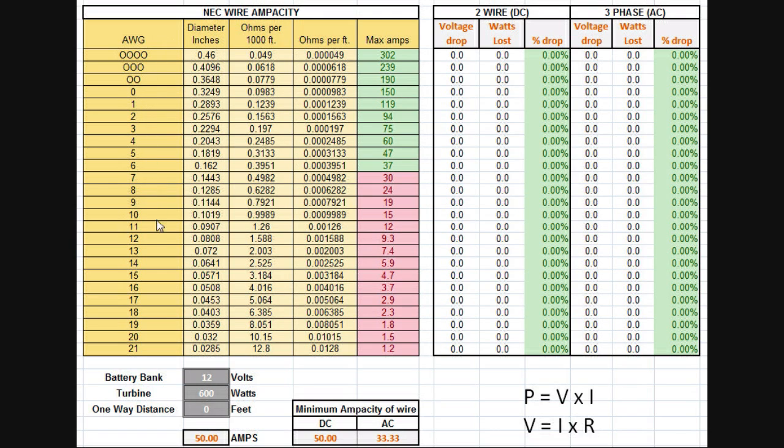I put the wire gauges from 4 aught all the way down to 21 gauge wire. The bigger the number, the thinner the wire is, and it will have higher resistance and therefore not carry as much current. There's information on diameter, the number of ohms per thousand feet, and then a column for ohms per foot. There's also a rating by the National Electric Code for transmission of power showing how many amps each of these different gauge wires is designed to safely carry.